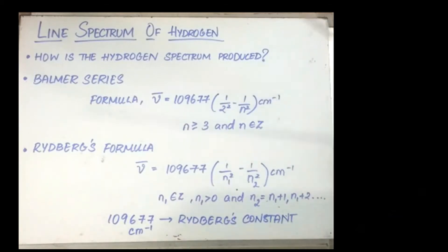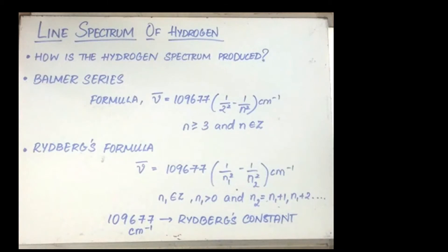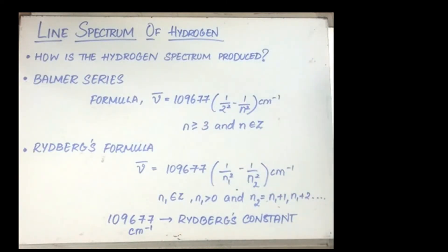The topic we are going to talk about now is the line spectrum of hydrogen. When electric discharge is passed through gaseous hydrogen, the hydrogen molecules dissociate and energetically excited hydrogen atoms produce or emit EMR of discrete frequencies. The hydrogen spectrum consists of a series of lines.